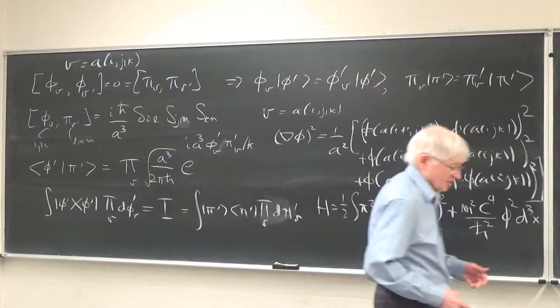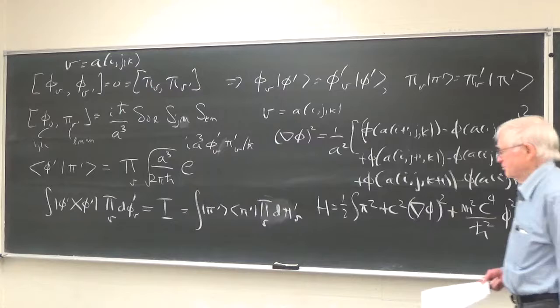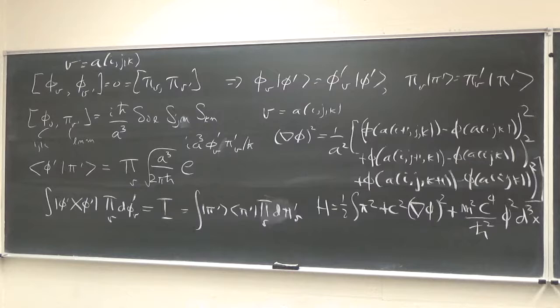A simple Hamiltonian for a scalar field would be one-half integral of pi squared plus c squared times the gradient of phi squared plus m squared c to the fourth over h-bar squared times phi squared, all integrated d³x. That's the field operator in the continuum. For the rest of this lecture I'm going to use natural units, though I may have h-bars floating around because it plays a more important role than c. It's really natural to set c equal to one; it's less intuitive to set h-bar equal to one.